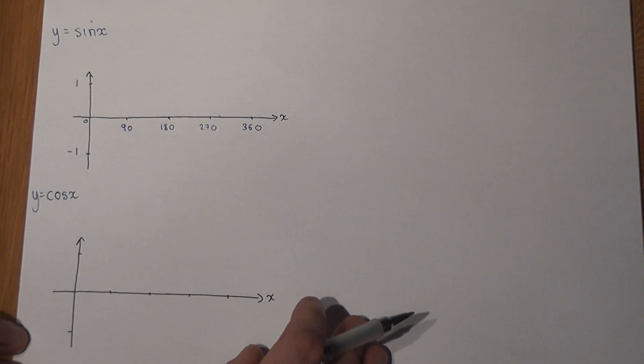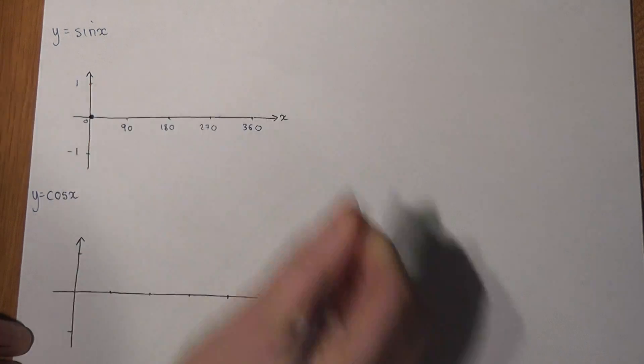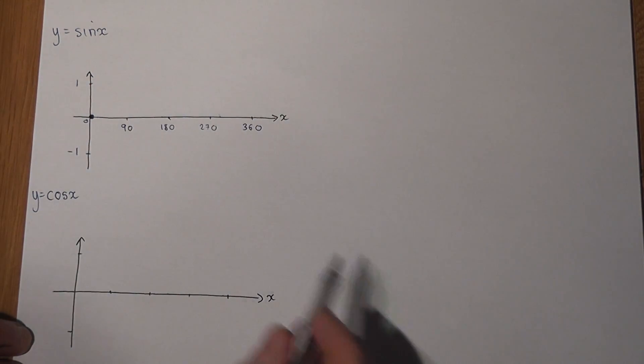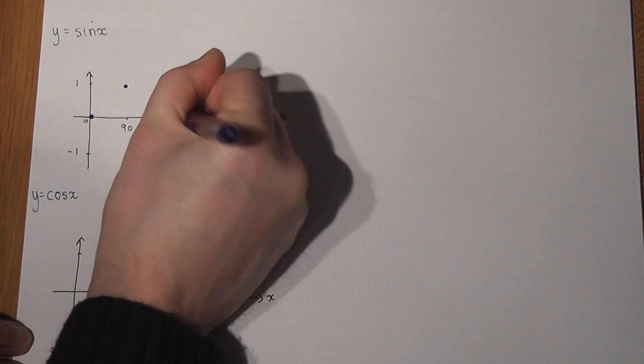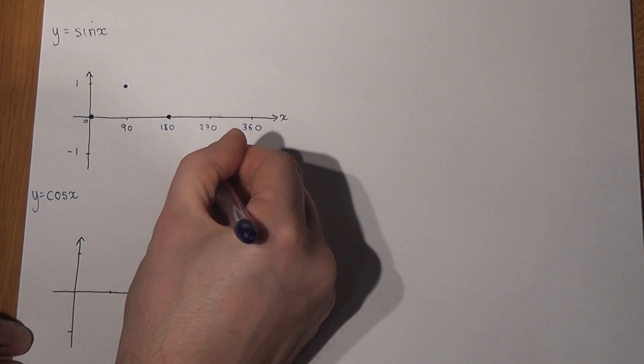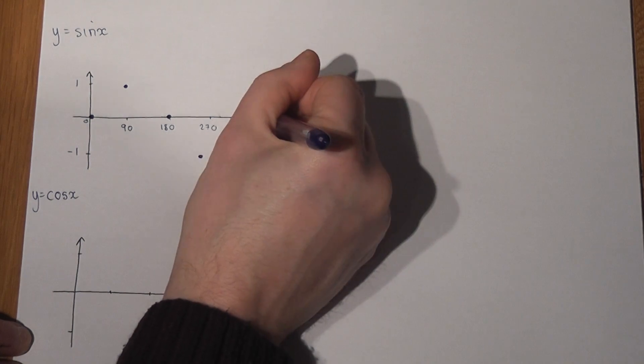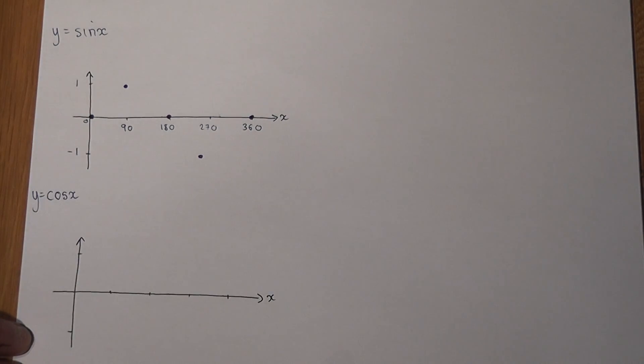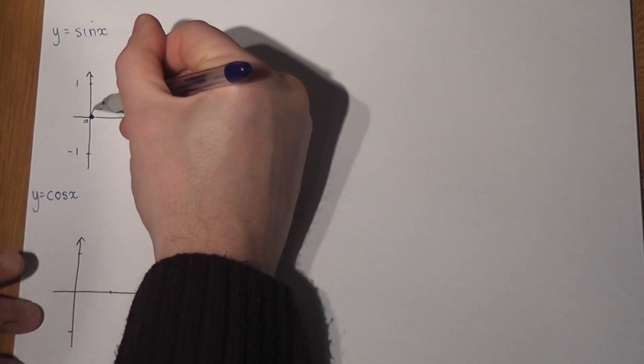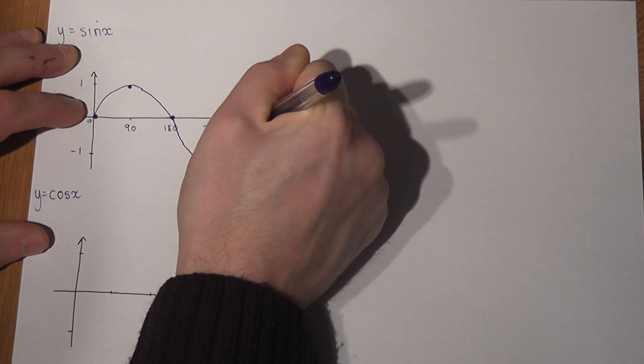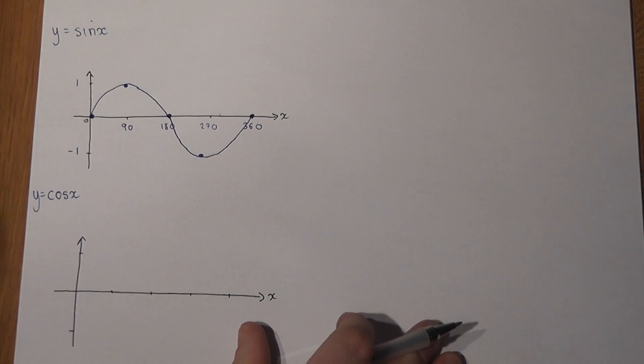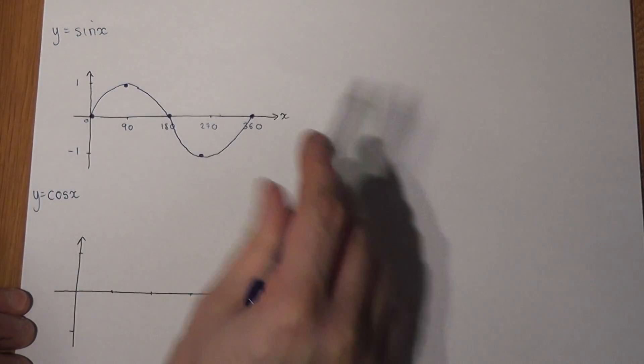Then what happens is that sine and cos are both waves or wave type graphs. Now sine x starts at the origin and then obeys a really simple pattern. At 90 it goes up to 1, it goes back down to 0 at 180, it goes to minus 1 at 270 and back to 0 at 360. Then all you've got to do is sketch a wave going through these key points. Only a sketch, but it indicates the shape of the graph.